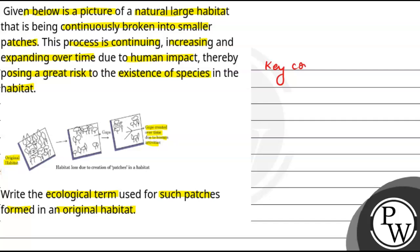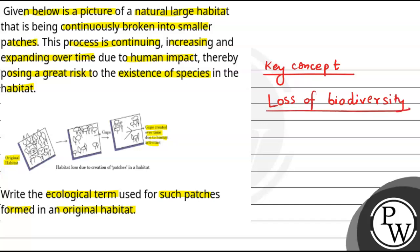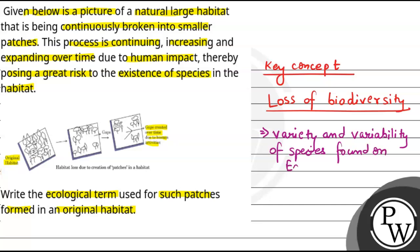If we talk about the key concepts related to this question, that will be loss of biodiversity. First of all, we define biodiversity. Biodiversity means variety and variability of species which are found on Earth. On different areas, we call biodiversity the biological organisms which form a diversity, because they are diverse and have many variables.